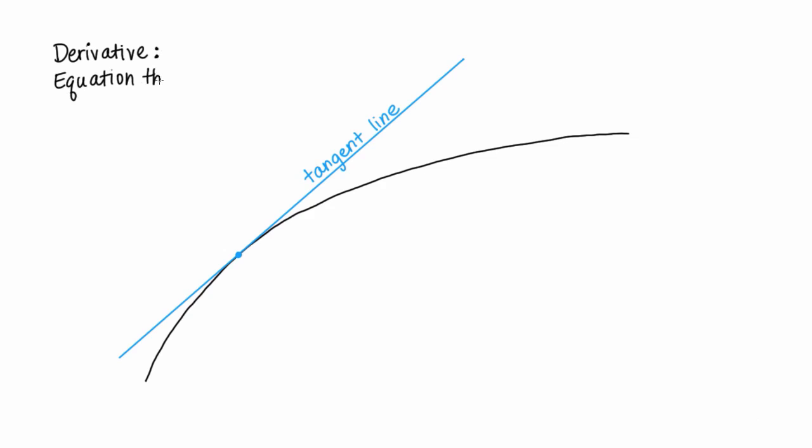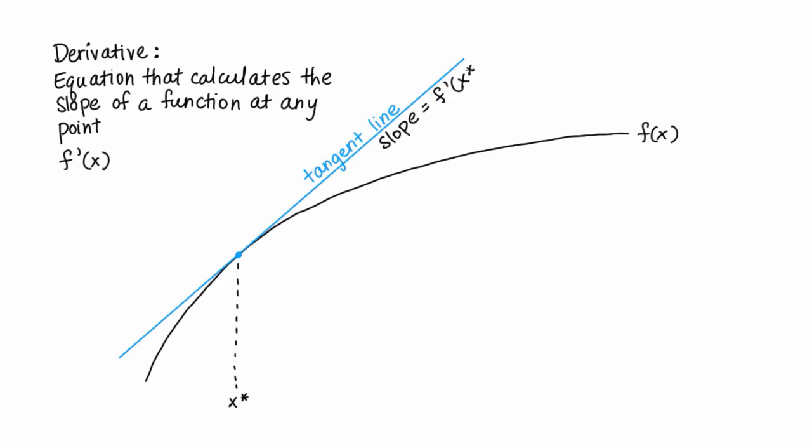The derivative is an equation that calculates the slope of a function at any point. So if this is the function f, the derivative we denote f prime of x. So if we wanted to know the slope of f at this point, x star, then we would plug x star into this equation for the derivative. So the slope of this tangent line would be f prime of x star.